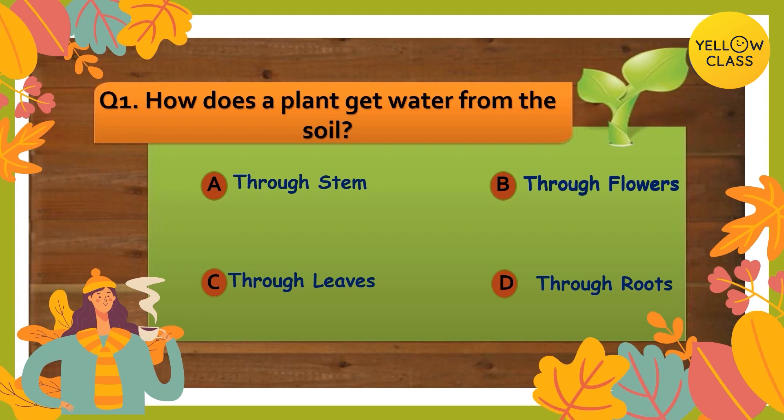How does a plant get water from the soil? A through stem, B through flowers, C through leaves, D through roots. Start clicking the right answer — I'm sure you smart kids know the correct answer. 10 seconds left... 5 more seconds... and your time is up!